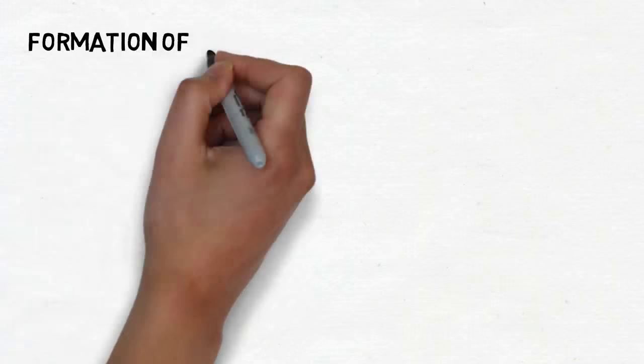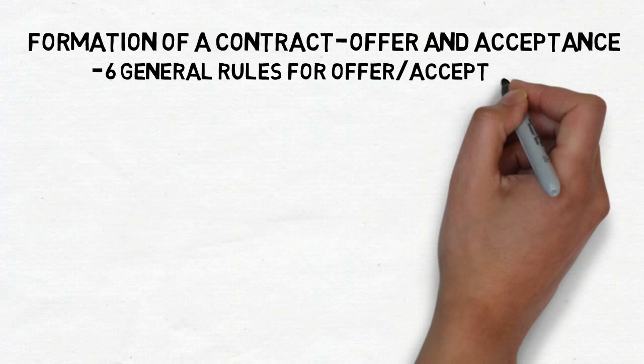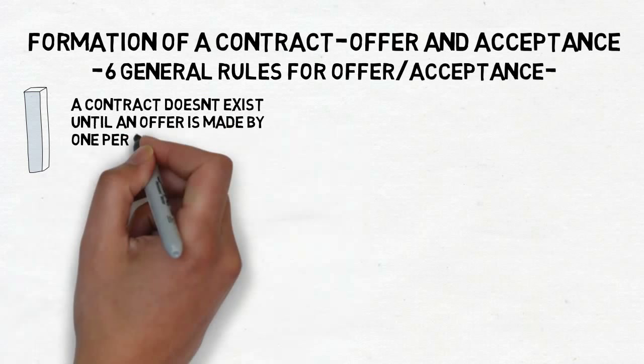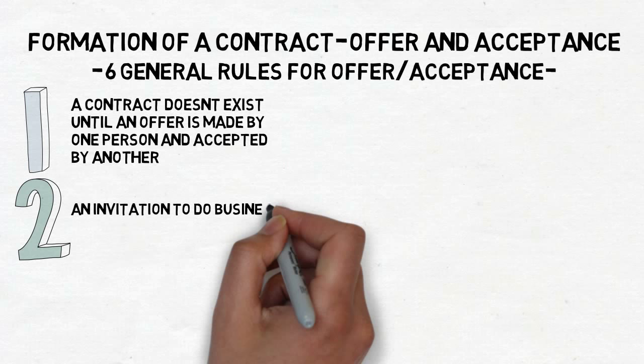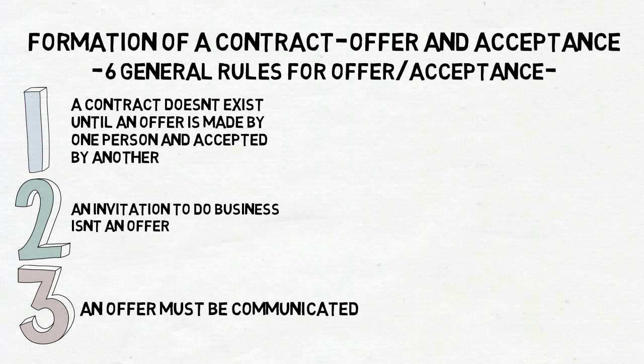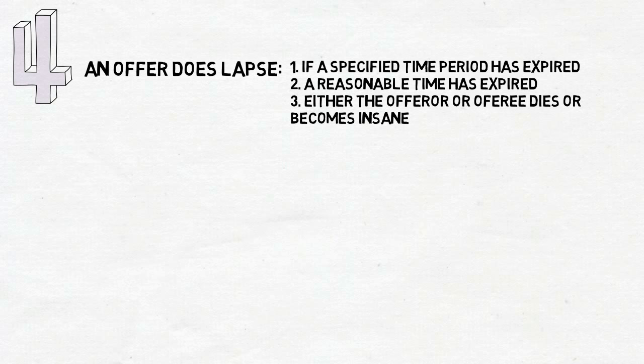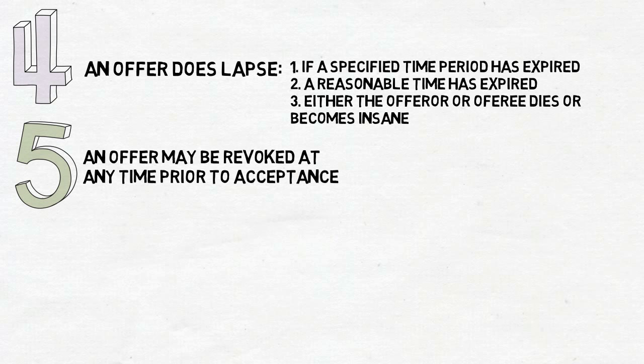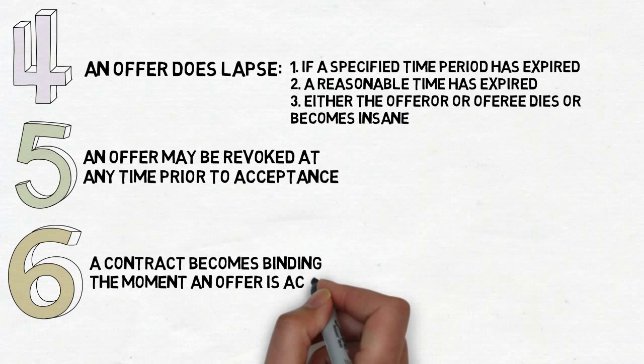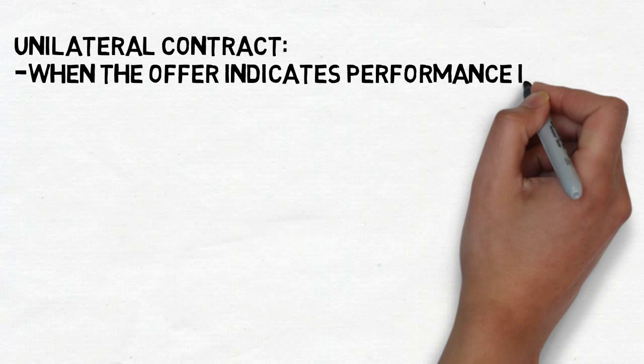Formation of a contract — offer and acceptance. There are six general rules. First, a contract doesn't exist until an offer is made by one person and accepted by another. Second, an invitation to do business isn't an offer. Third, an offer must be communicated. Fourth, an offer can lapse in three ways: a specified time period has expired, a reasonable time has expired, or either the offerer or offeree dies or becomes insane. Fifth, any offer may be revoked at any time prior to acceptance. Sixth, the contract becomes binding the moment an offer is accepted. Finally, a unilateral contract is when the offer indicates that performance initiates the contract instead of acceptance, like the Carbolic Smoke ad.